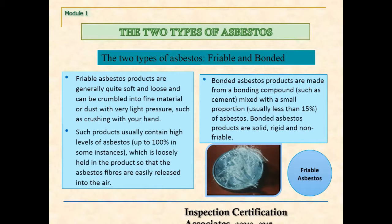Bonded asbestos products are made from a bonding compound, such as cement, mixed with a small proportion — usually less than 15% — of asbestos. Bonded asbestos products are solid, rigid, and non-friable.